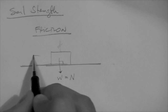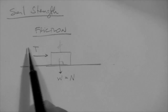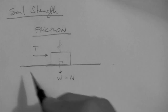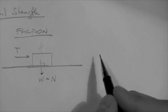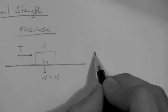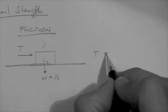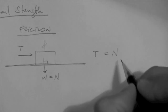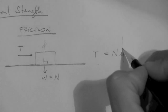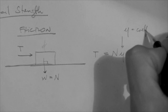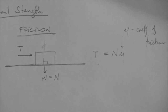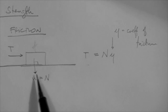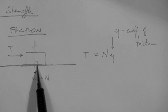We know that it takes a force — this T force — to push the block, and that force is not zero. The force required to push this block and make it start moving is equal to N, the normal force, times mu. And mu is the coefficient of friction for the condition at the interface.